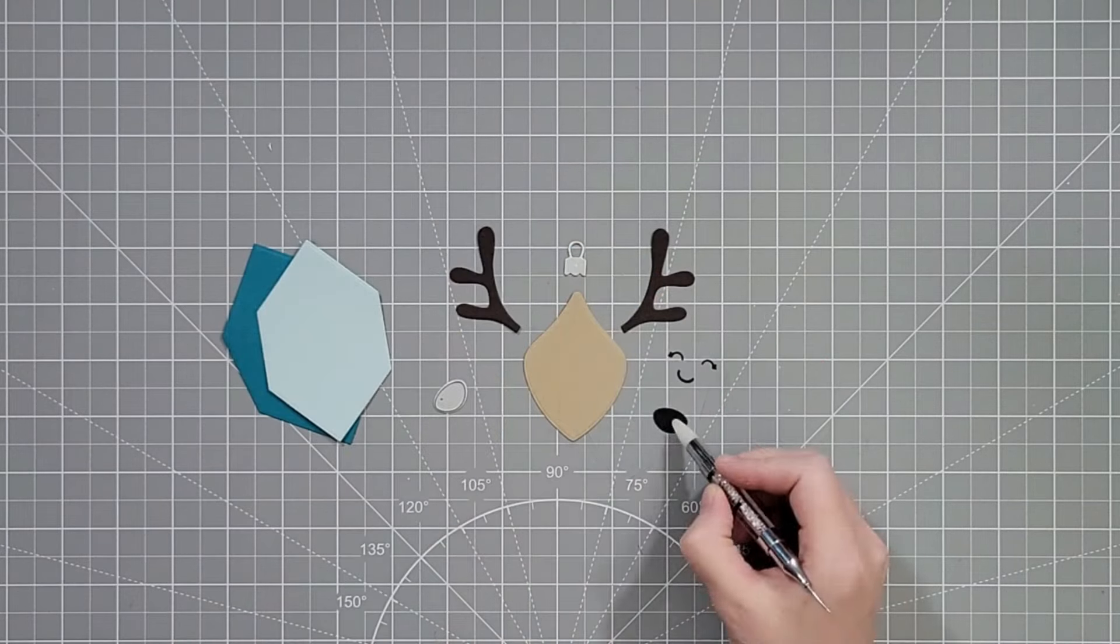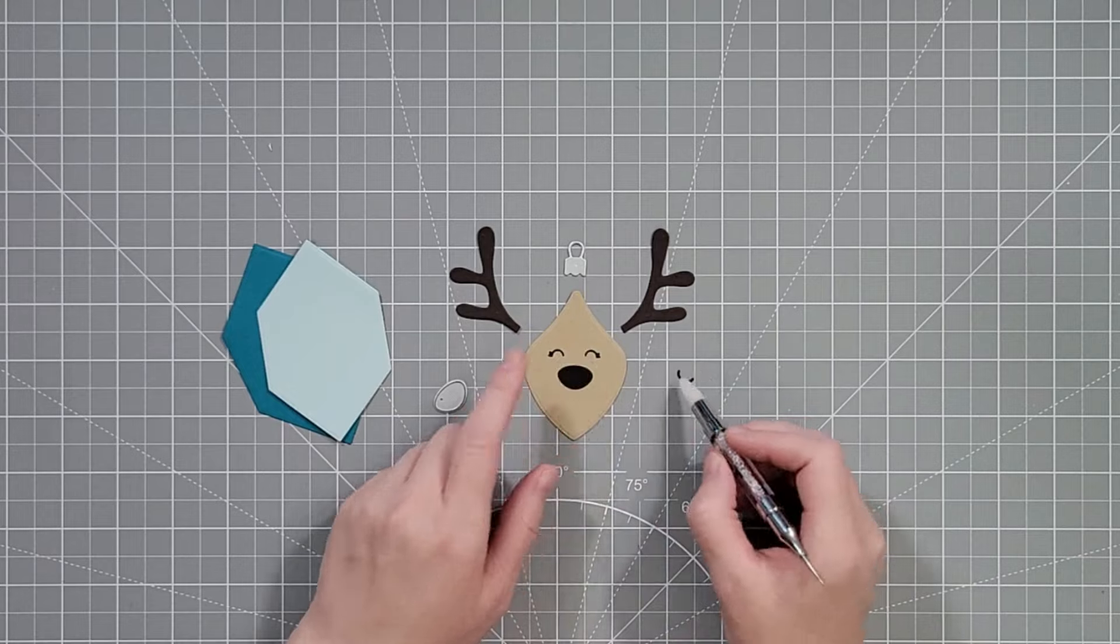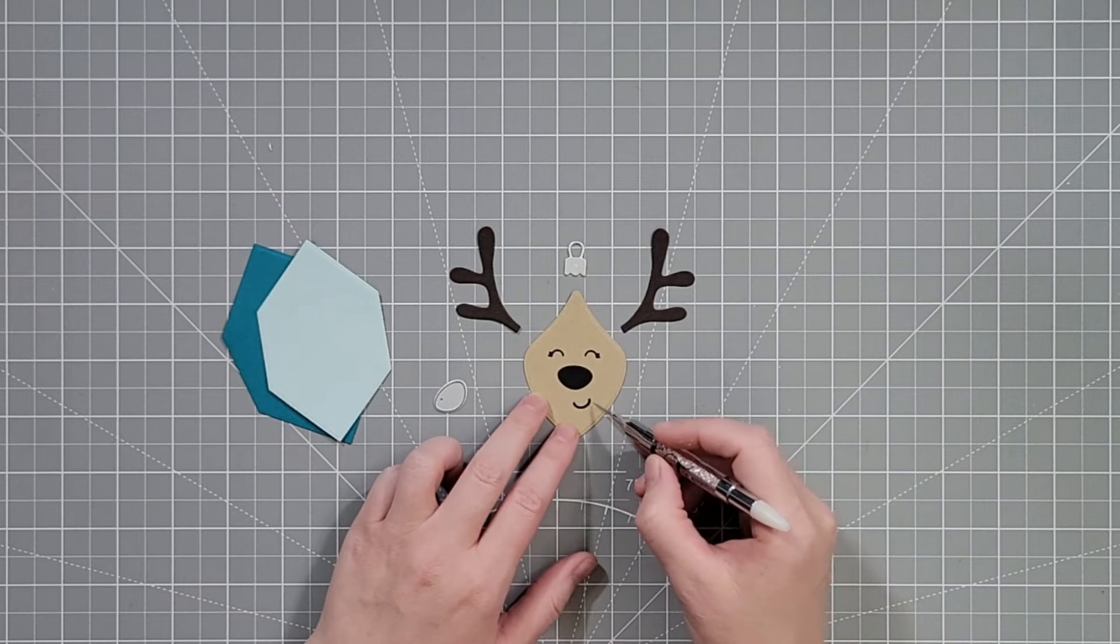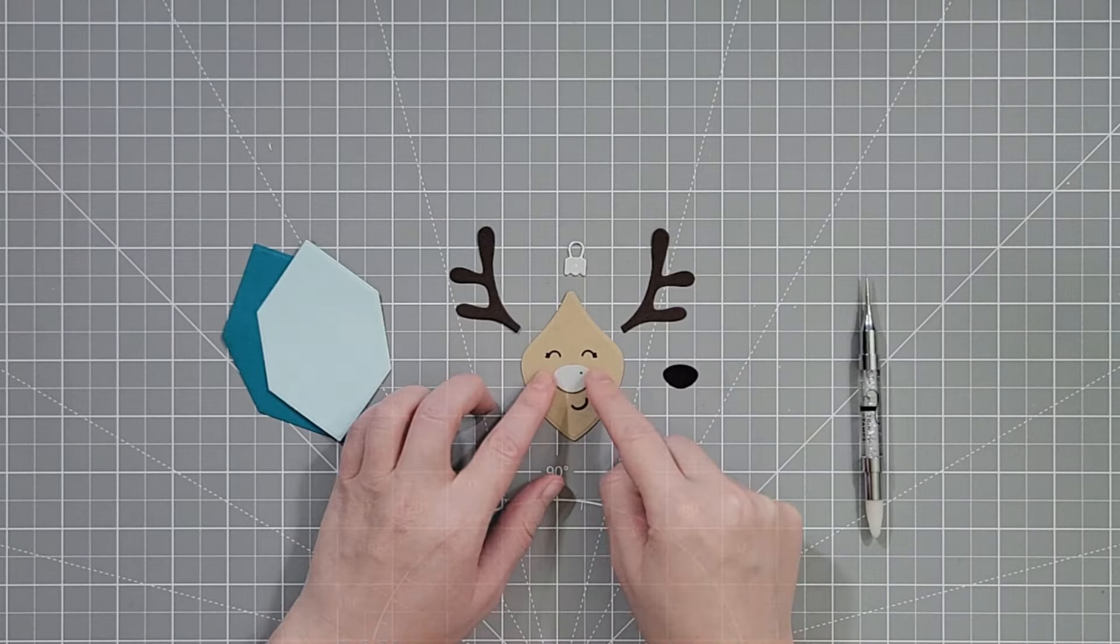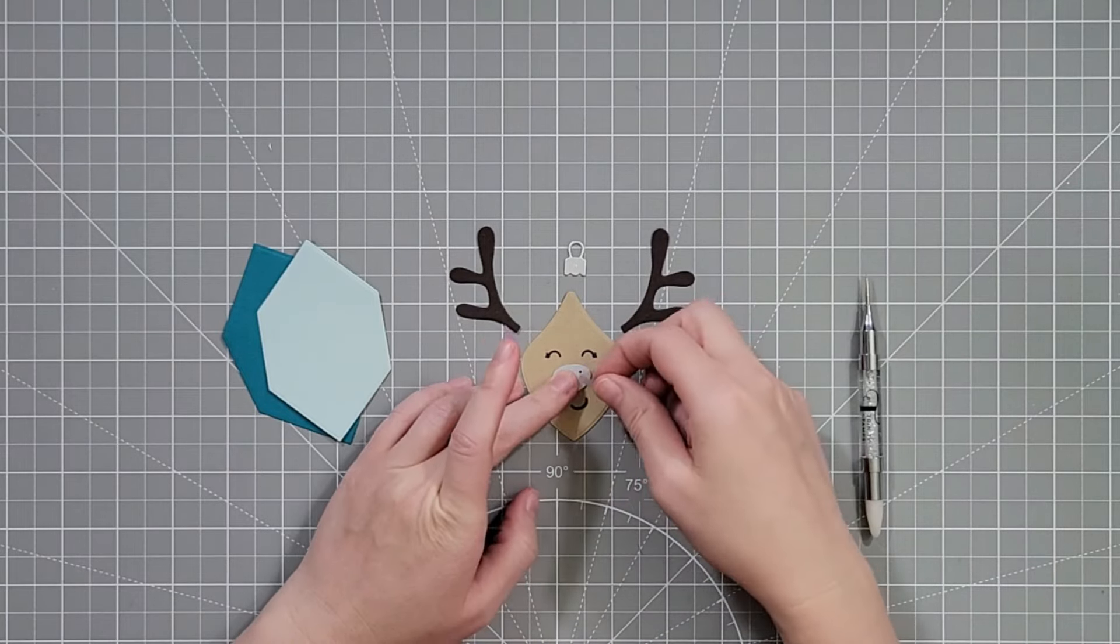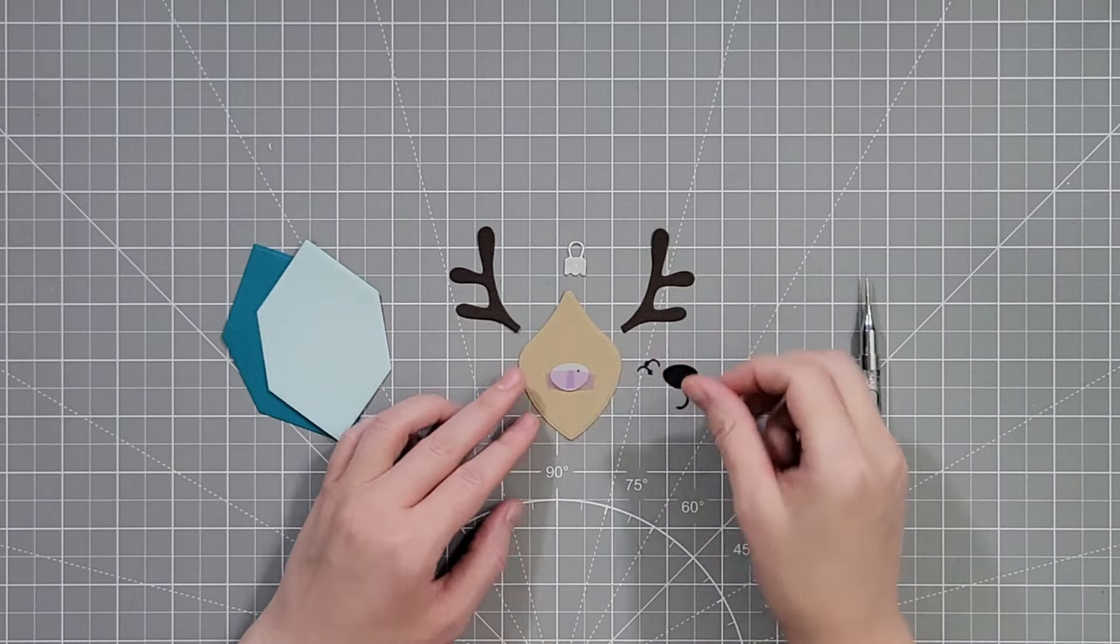If you've not used Pear Blossom Press's lights before, the one light is a really great place to start. It's super easy. So I'm just figuring out where the nose needs to go on my ornament and I'm going to take the nose die and I'm going to tape it right on there.